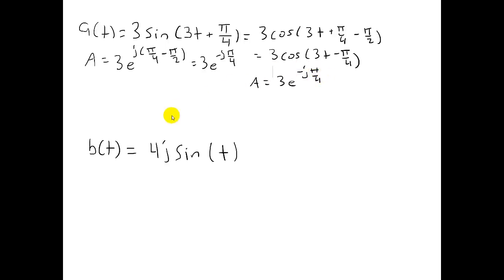Final example, B(t) equals 4j sine of t. This one's a little tricky because it's not written in the form we're used to where it would be magnitude of B sine of omega t plus phi. That's because this is a complex number here, whereas this is just magnitude of a number.